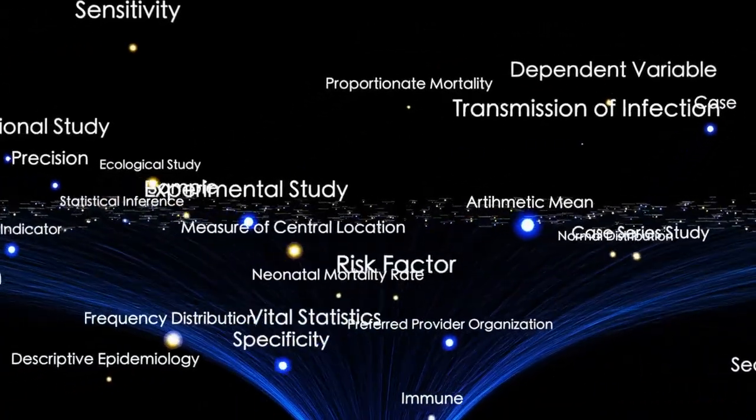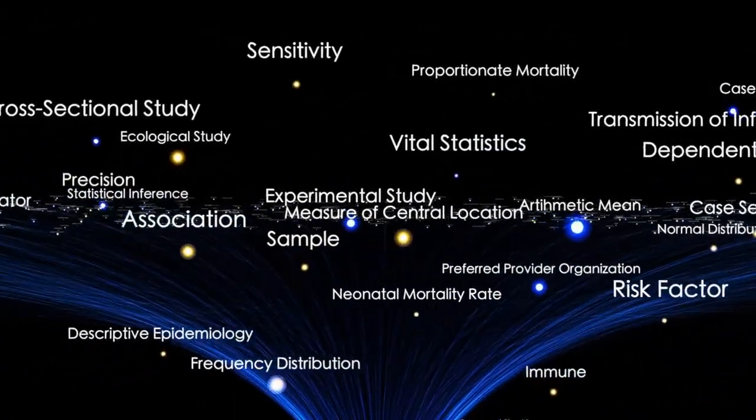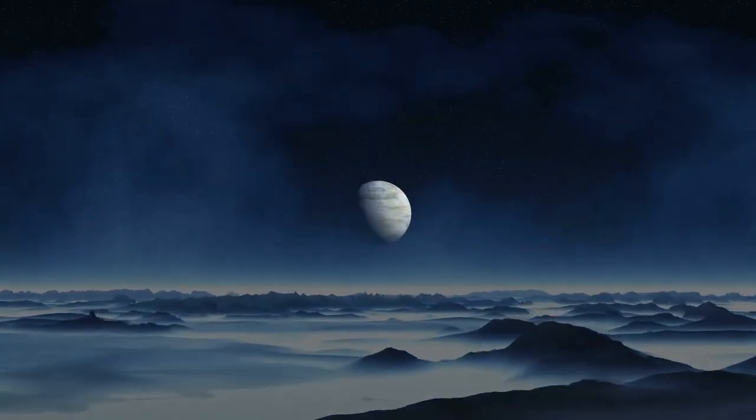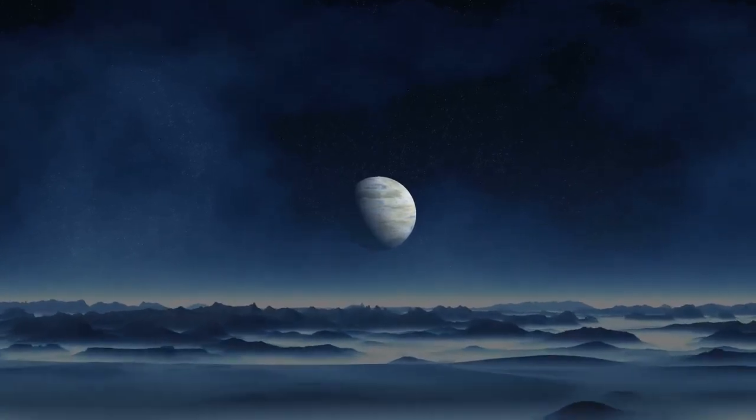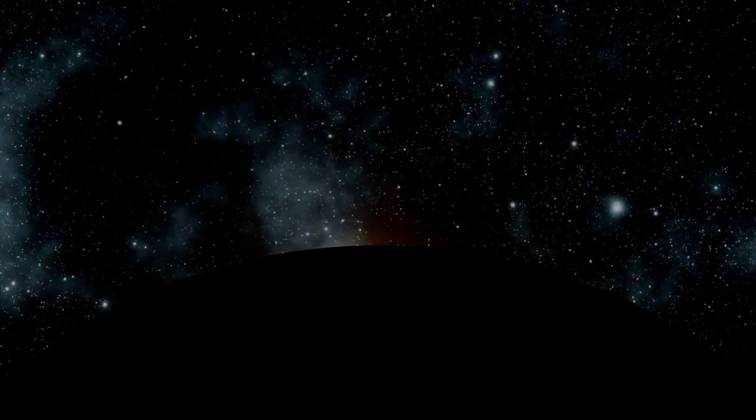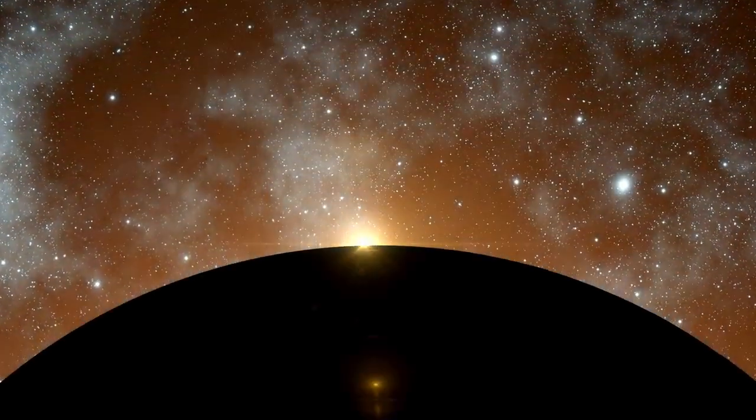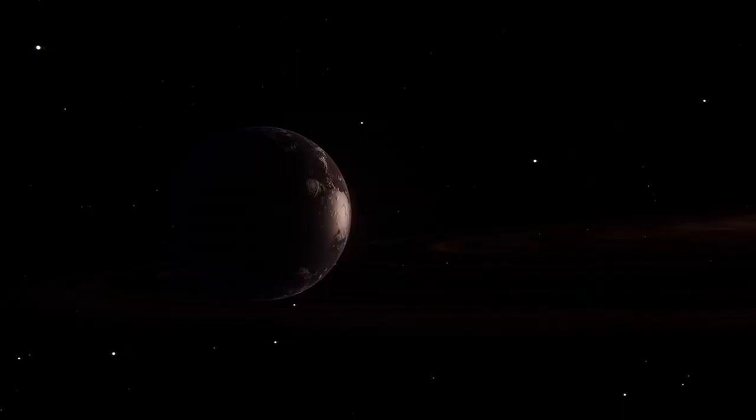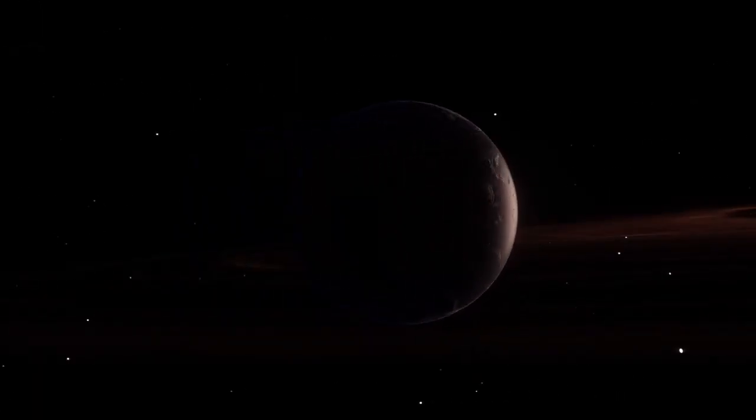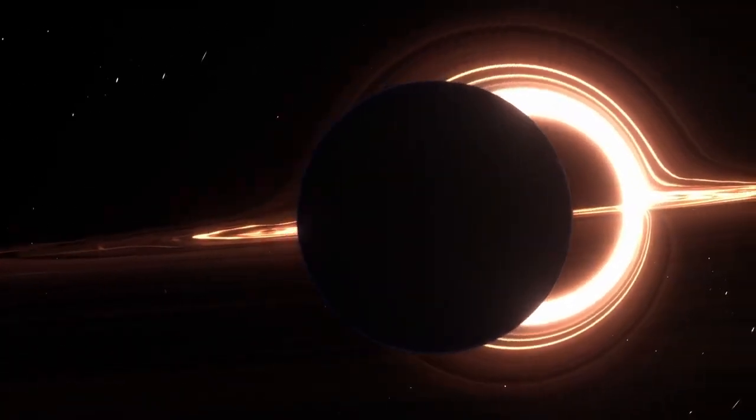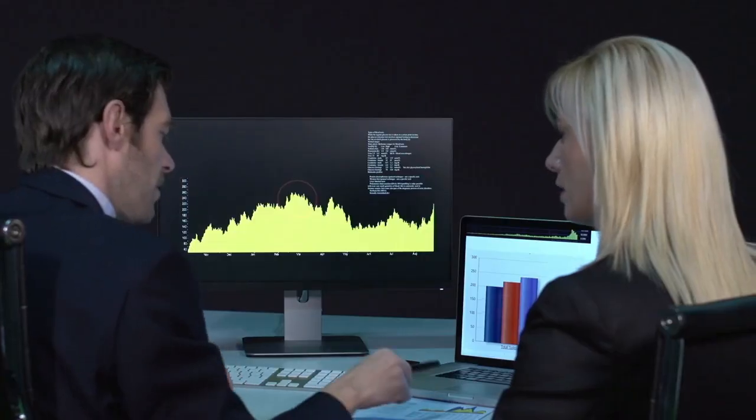But what truly set it apart was its orbit: just 0.05 astronomical units from its star, a mere tenth the distance between Mercury and our Sun. And yet, thanks to the much lower luminosity of Proxima Centauri, the planet falls comfortably within the habitable zone. Despite its tantalizing placement, Proxima b has remained cloaked in uncertainty, especially concerning its ability to support an atmosphere or life.